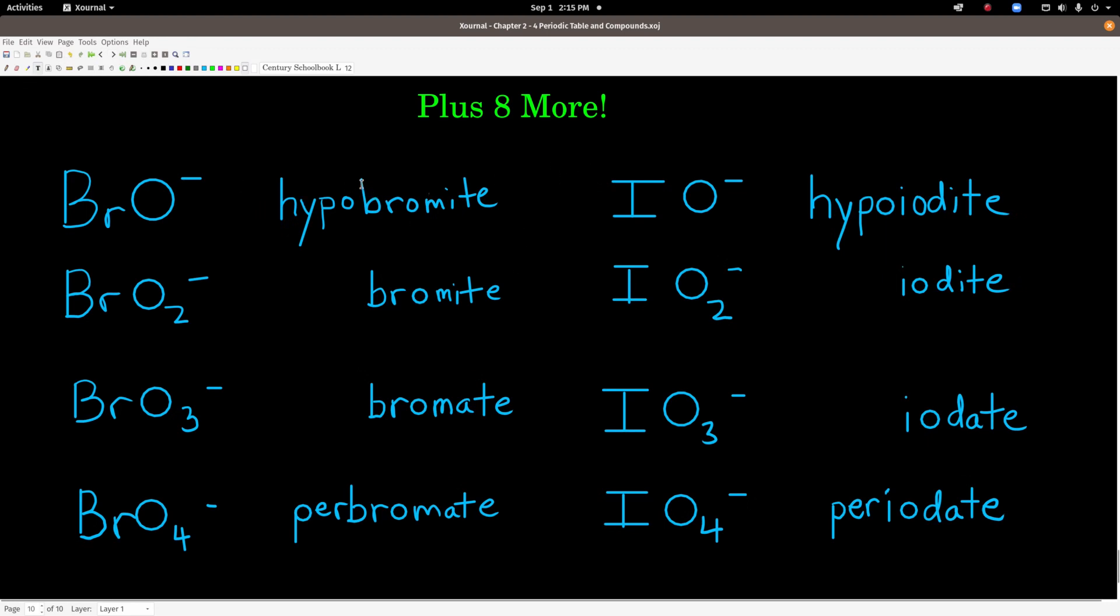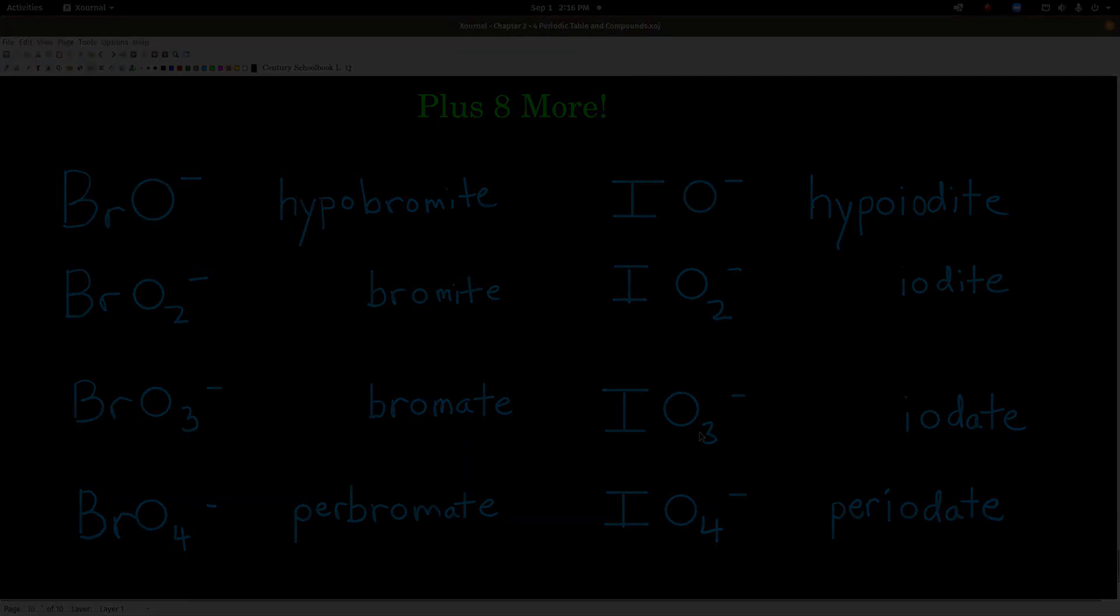There are eight more you should add to your list. There's a pattern here. Notice these four on the left have one bromine and one, two, three, or four oxygens. They all have a negative one charge. The pattern is hypobromite, then we take the hypo away. With two oxygens it's bromite, three oxygens is bromate, and four oxygens is perbromate. Same pattern for iodine: hypoiodate, iodate, iodate, periodate. Chlorine also does this, but it's already in that table. There's hypochlorite, chlorite, chlorate, and perchlorate.